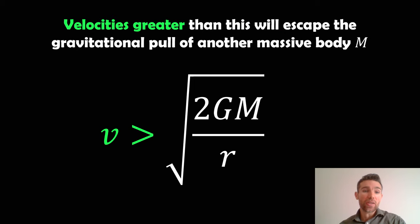Anything greater than that, any velocities greater than that, then this object will be able to escape the gravitational pull of the larger, more massive object M.